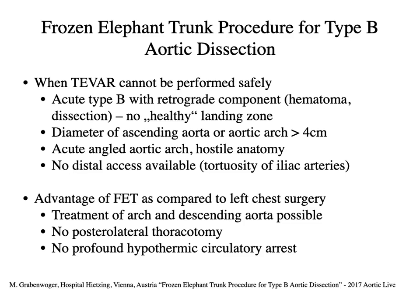The frozen elephant trunk procedure is relevant for type B aortic dissection when TVAR cannot be performed safely. Indications include: an acute type B with a retrograde component and hematoma or dissection in the arch providing no healthy landing zone; patients with an aortic arch or ascending aorta greater than four centimeters (higher risk of retrograde type A dissection); hostile aortic morphology such as extreme angulation; and patients with no distal access due to occluded or extremely tortuous iliac arteries.